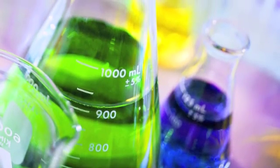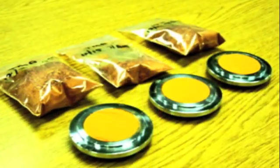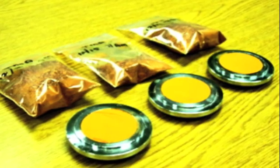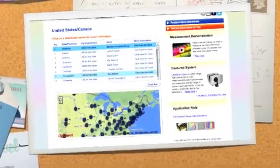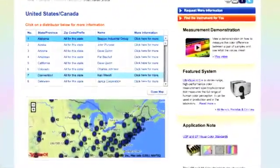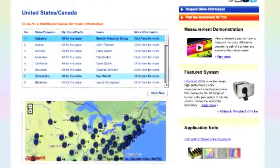HunterLab instrumentation takes the guesswork out of quality control. It eliminates subjectivity and allows you to use objective instrumental methods for color control in the chemical industry. Contact your local HunterLab sales representative for more details or demonstration.